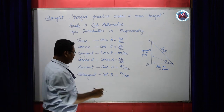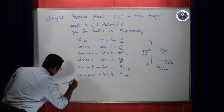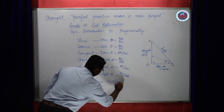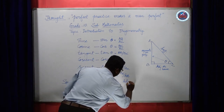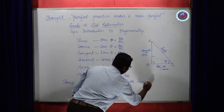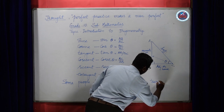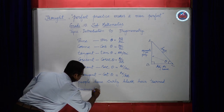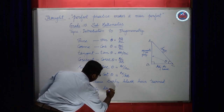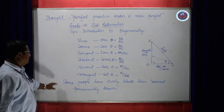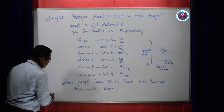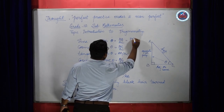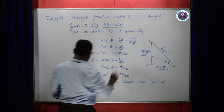To remember this formula, you can use a shorthand notation — a mnemonic sentence: 'Some people have curly black hair turned permanently brown.' If you take the first letter of each word — SPH — that means sine theta is perpendicular by hypotenuse, where H indicates hypotenuse.